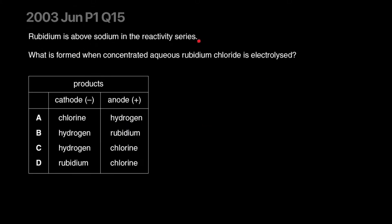Rubidium is above sodium in the reactivity series. What is formed when concentrated aqueous rubidium chloride is electrolyzed? In the solution there's a beaker, you have positive ions and negative ions. Because it's a solution, it'll also have water. So you have the rubidium ion, it's positive something, and hydrogen is competing with it to discharge. On the other side you have chlorine ions and hydroxide ions. The idea is one of these two will discharge and one of these two will discharge.